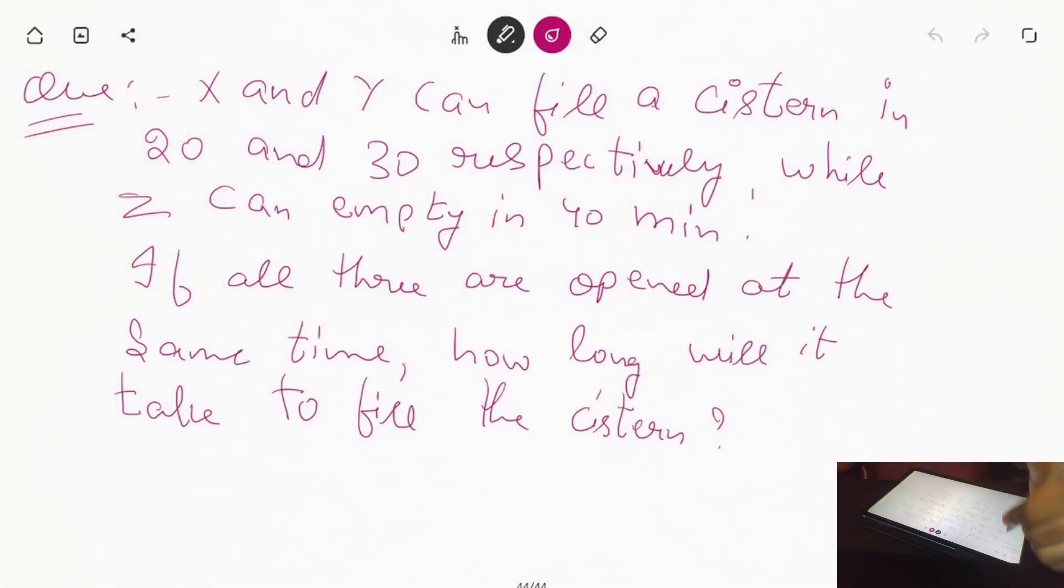So our question is that X and Y can fill the cistern in 20 and 30 minutes respectively, while Z can empty in 40 minutes. So if all three are opened at the same time, how long will it take to fill the cistern? So this is our basic solution. Now what we are saying is that 20 and 30 are filling, that is 1 by 20 and 1 by 30 is filling, and Z is emptying.